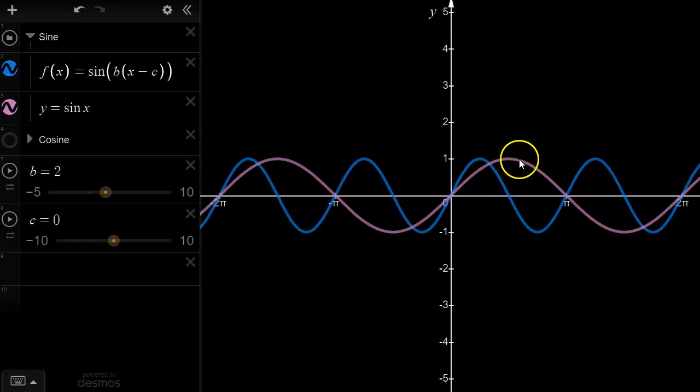So before, if you look at the pink graph, I can complete one cycle only between 0 and 2 pi, but now the blue graph is the transformation, it is the graph of y equals sine 2x, and I can fit one cycle in between 0 and pi.